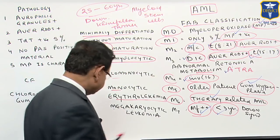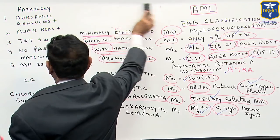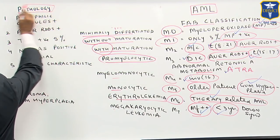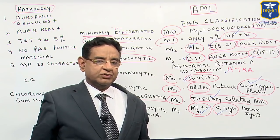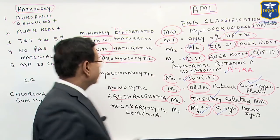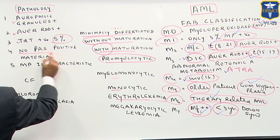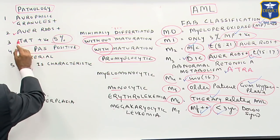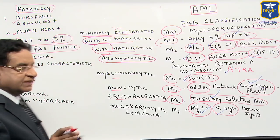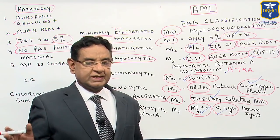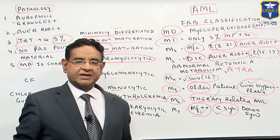Now we talk about the important points in the pathology that you should know. In the pathology, when we see the peripheral smear, you get azurophilic granules in AML — just for recall, azurophilic granules are not present in ALL. Auer rods are present. TdT is positive only in 5 percent, and no PAS-positive material is seen. Remember, TdT was positive in 95 percent of ALL cases and PAS-positive material was seen in ALL, but these two are not seen in AML. And of course, myeloperoxidase stain is characteristic — it is very characteristic of AML.